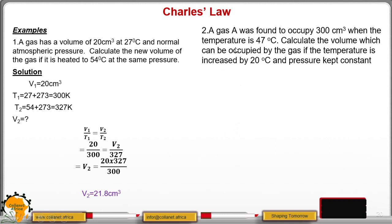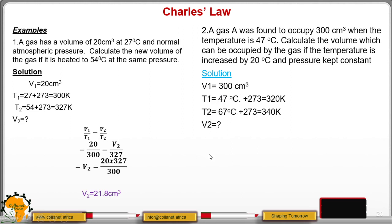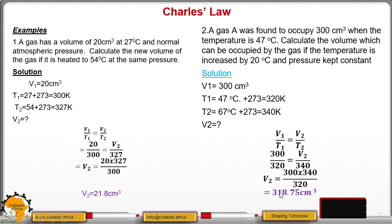Example two: gas A was found to occupy 300 cubic centimeters when the temperature is 47 degrees Celsius. Calculate the volume occupied by the gas if the temperature is increased by 20 degrees Celsius and pressure is kept constant. We write V1, T1, T2, and find V2. Note that the temperature is increased by 20, so from 47 you add 20 to get 67 degrees Celsius, then convert to Kelvin by adding 273. Applying the formula V1 over T1 equals V2 over T2 and substituting, V2 is 318.75 cubic centimeters.